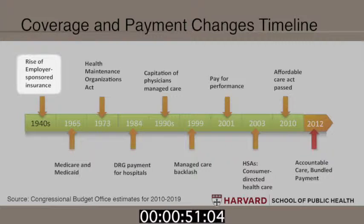In World War II, there were price freezes that were put into place by the government. When employers wanted to recruit the few remaining workers that were available, they had to use something else — and what they used was an offer of health insurance. Around this time, health insurance became more valuable to workers and others because hospitals became more expensive and treatments became more expensive. This is a big part of enhanced access.